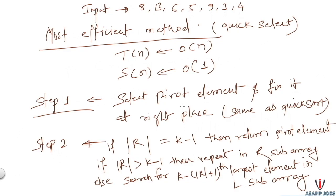In step two, if the size of the right subarray equals k minus 1, that means the pivot element is the kth largest element, so we simply return it. If the size of the right subarray is greater than k minus 1, we can completely ignore the left subarray, since the kth largest element will be in the right subarray. We take that right subarray and repeat the process from step 1.